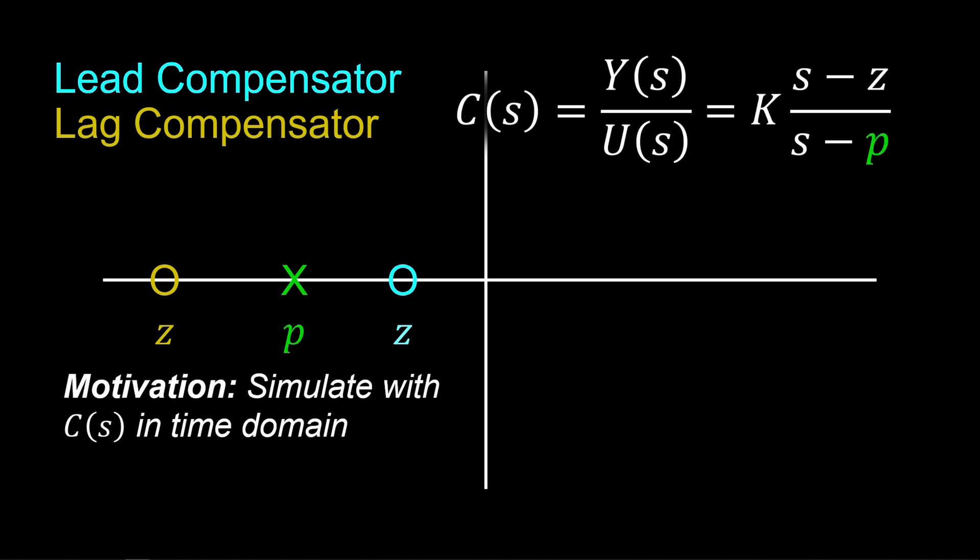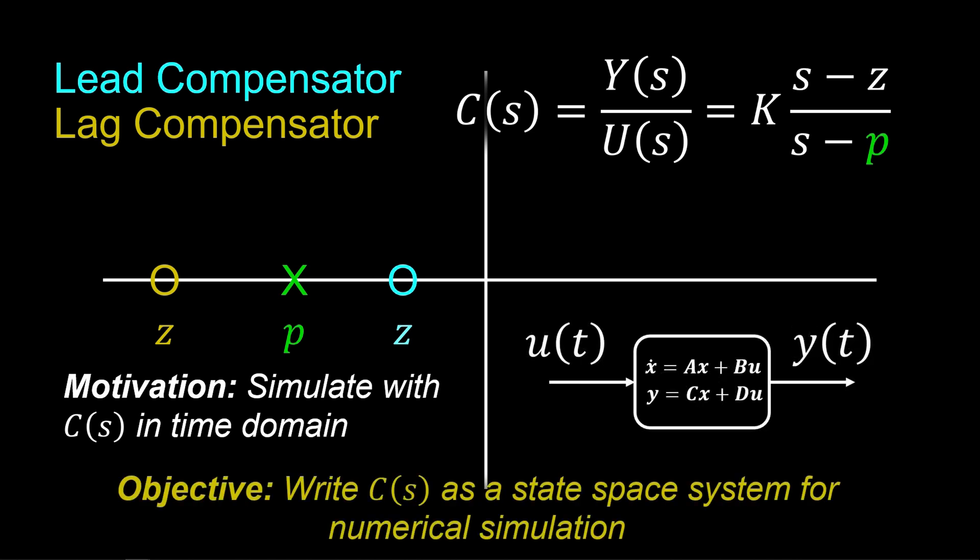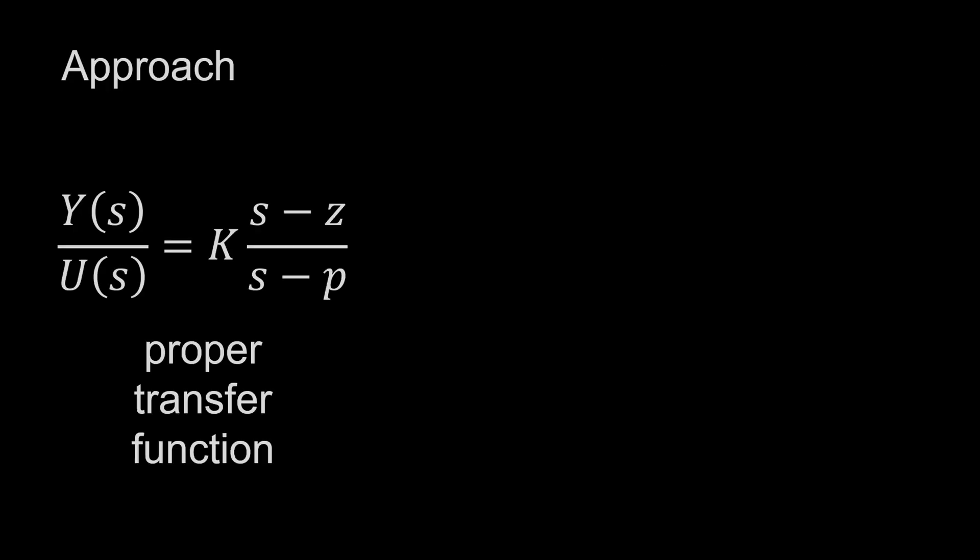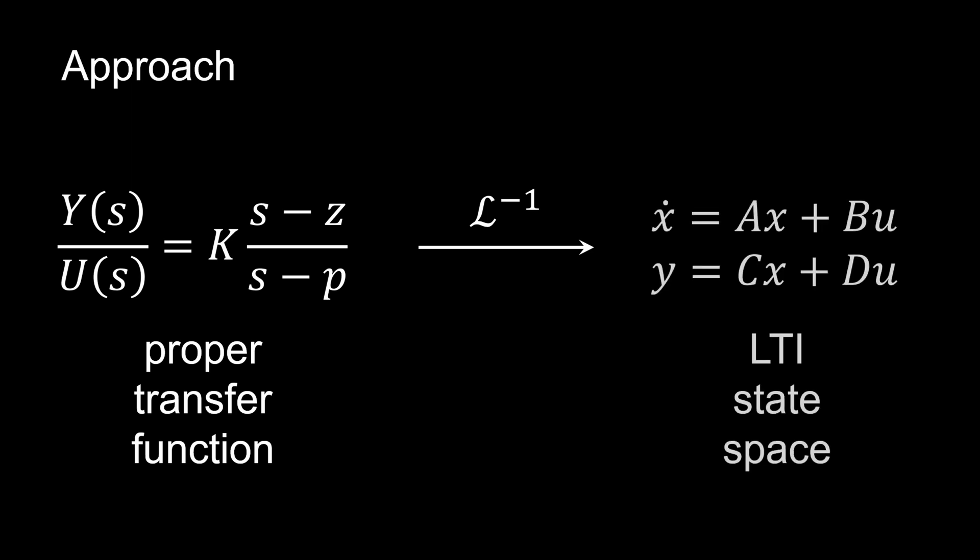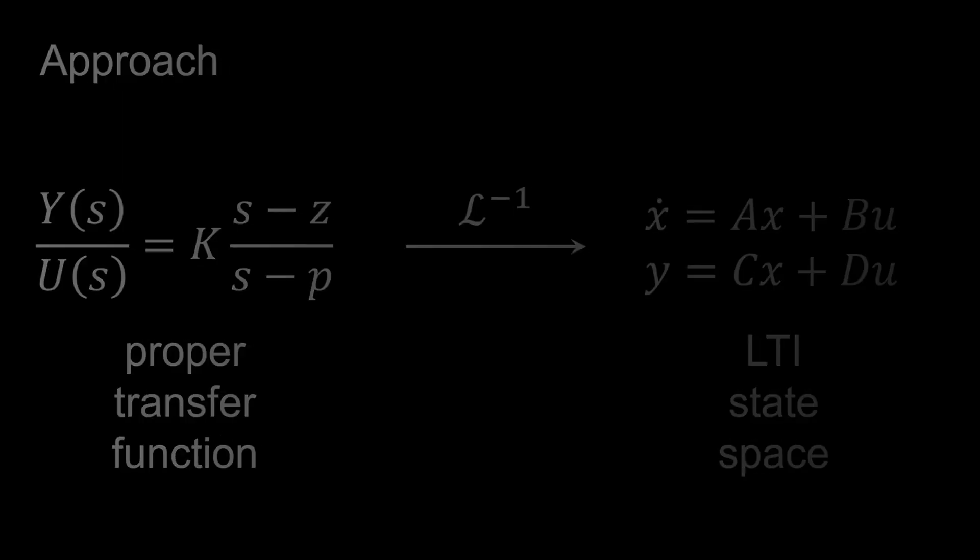Here, our motivation comes from the need to simulate a control system with a compensator in the time domain. So our objective is to obtain a time domain equivalent representation of the compensator C of S, that is a state space model. Our approach involves taking the inverse Laplace transform of the transfer function to obtain the linear time invariant, or LTI, state space system.